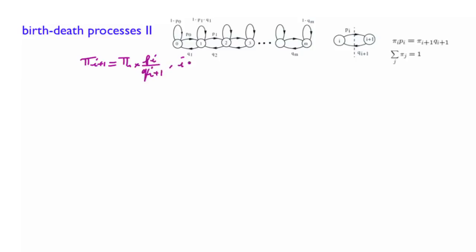More specifically, we have pi i plus 1 equals pi of i times p of i divided by q of i plus 1. This is true for i equals 0 up to m. To start the recursion, we need to find pi of 0, which can be done using these normalization conditions, which leads to pi of 0 times 1 plus p0 over q1 plus et cetera equals 1.